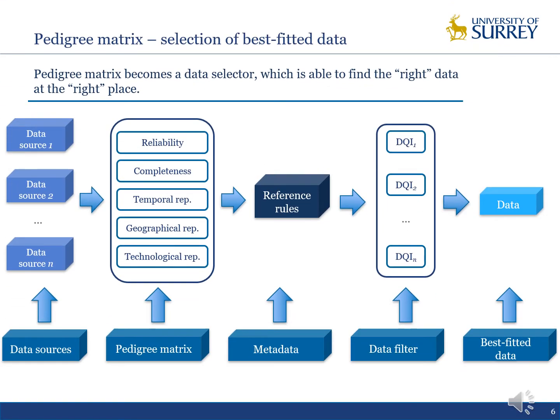This figure explains more specifically the process for data selection using Pedigree Metrics. Given the different data sources, we create reference rules to attribute a score for each quality aspect. Then we aggregate the scores into a single data quality indicator, which can be ranked from poor quality to good quality. According to the ranking order, the user can choose data of good quality.